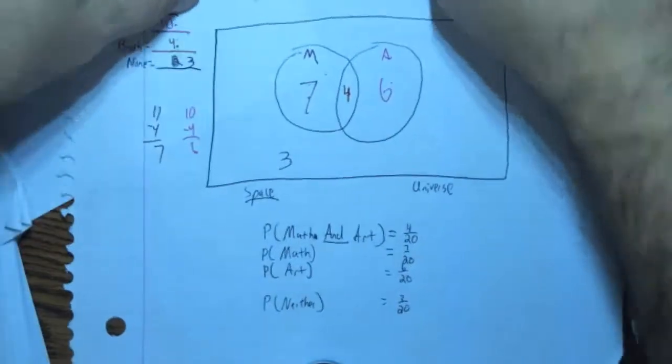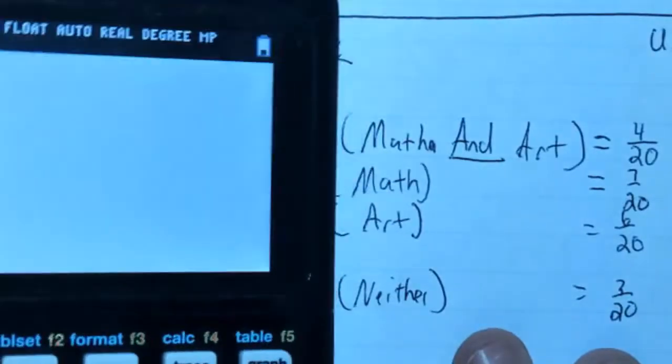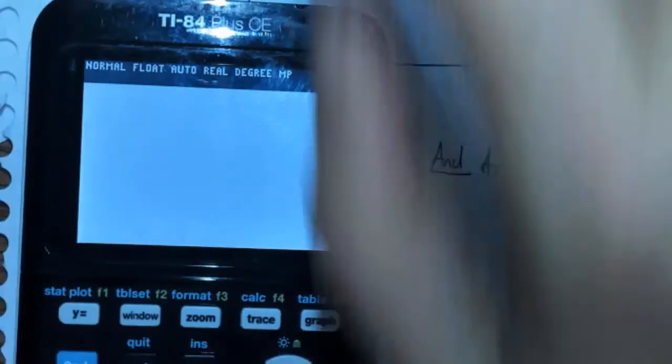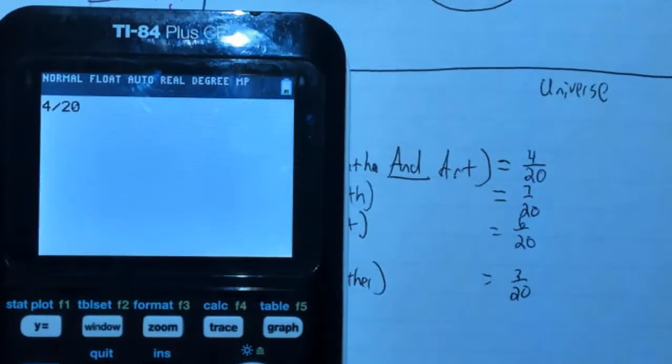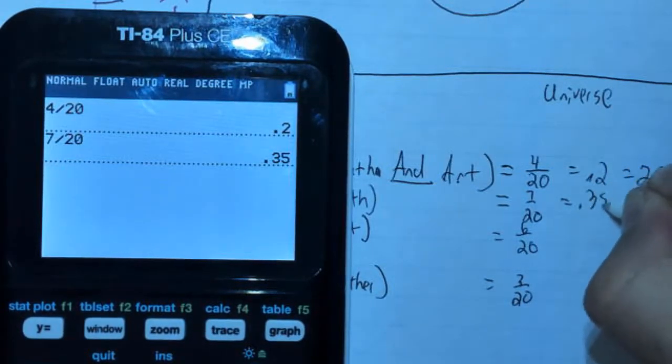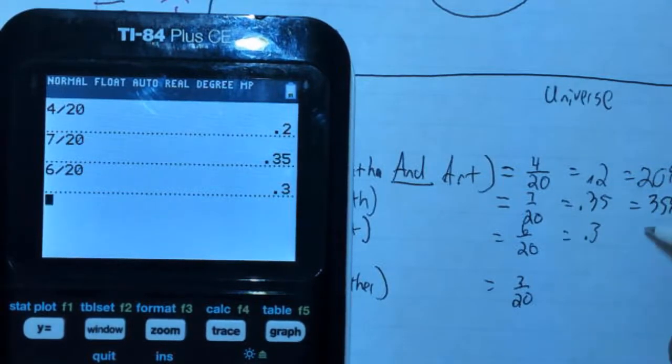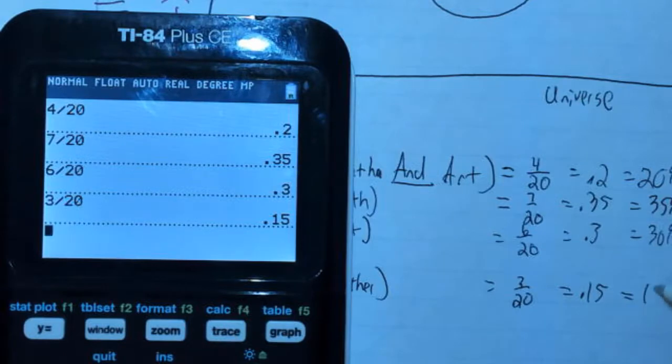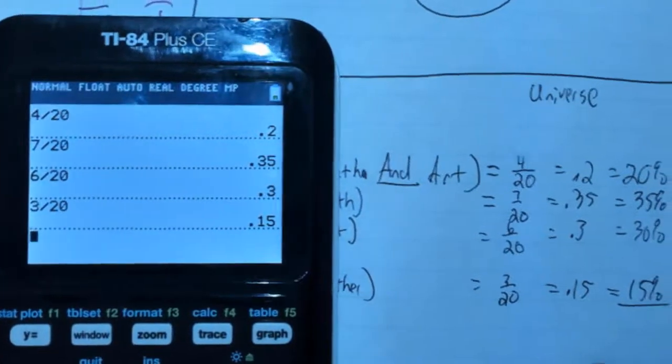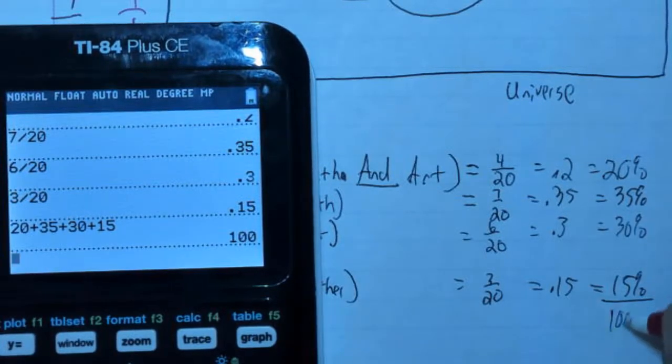Now let's go ahead and take our calculator and simplify these. Four divided by twenty comes out to 0.2 times one hundred is twenty percent. Seven divided by twenty is 0.35 which is thirty five percent. Six divided by twenty is 0.3 which is thirty percent. And three divided by twenty is 0.15 which is fifteen percent. Now let's add all those together just to make sure that we have one hundred: twenty plus thirty five plus thirty plus fifteen, sure enough came out to exactly one hundred percent.